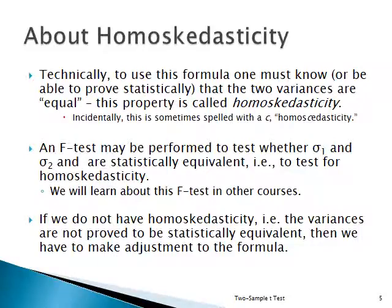To use the two-sample t-test, you first have to test for something called homoscedasticity. You have to prove — and there's a way to do it with an F-test — that the two variances are equal. That's what homoscedasticity means: that the two variances are statistically equal, not necessarily exactly equal, but statistically equivalent.